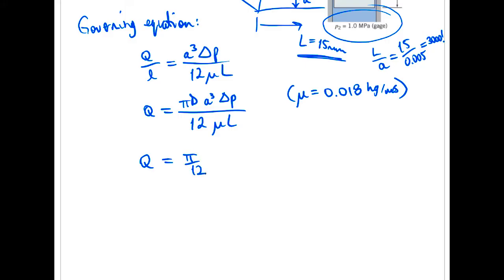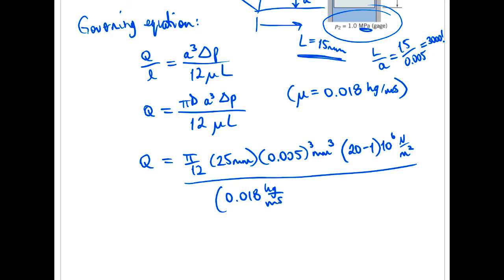If we're careful, we can keep our units and double check these later. So our diameter was given in millimeters. Let's go ahead and sub that in: 25 millimeters, 0.005 cubed, and that's millimeters cubed. Our delta P there was given as 20 megapascals and 1 megapascal. So 20 minus 1, times 10 to the sixth because it's megapascals. That's newtons per meter squared over 0.018 kilogram per meter second. And 15 millimeters is our L distance. All of that given. Okay, so I'm going to actually do the unit check here because that was another weakness I've seen in the past.